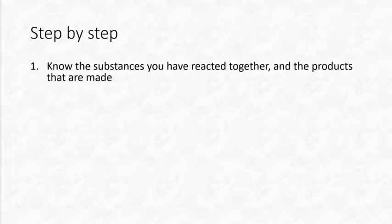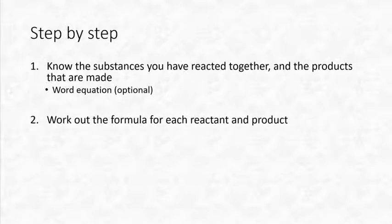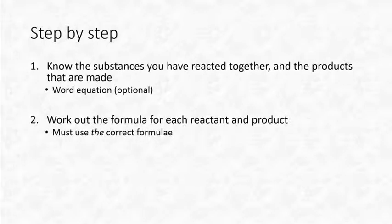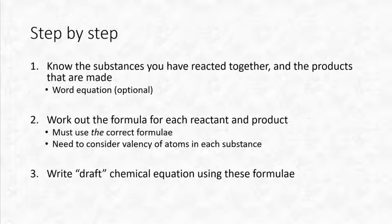Going step by step: firstly, we need to know which substances reacted together and which products are made. My tip if you're struggling is to use a word equation first, then work out the formula for each reactant or product. We need to consider the valency of the atoms in each substance to come up with a correct formula, or we can look it up.